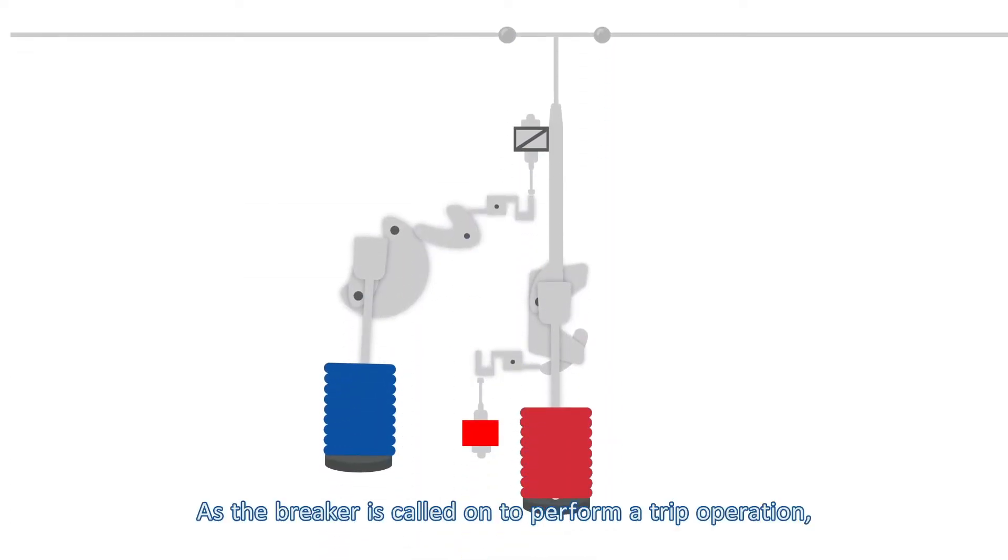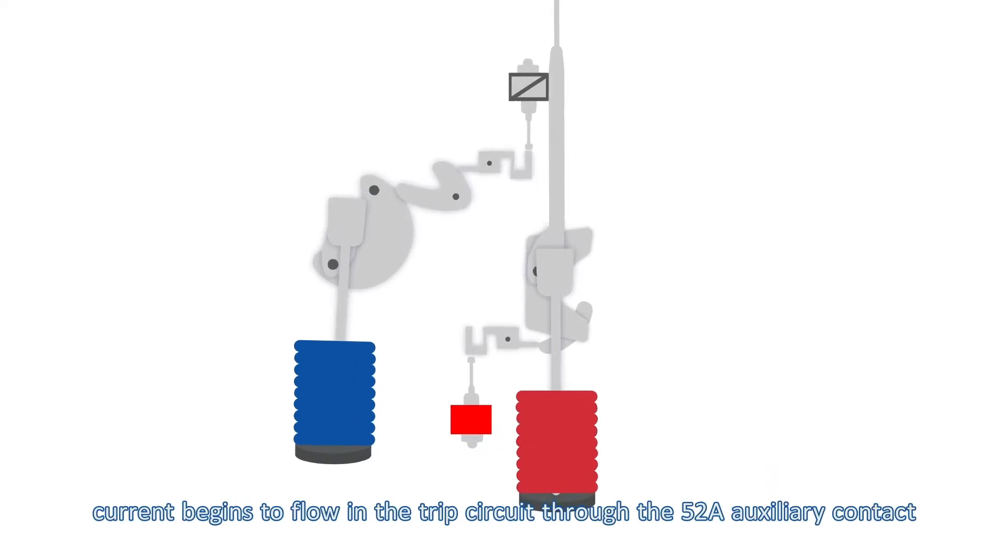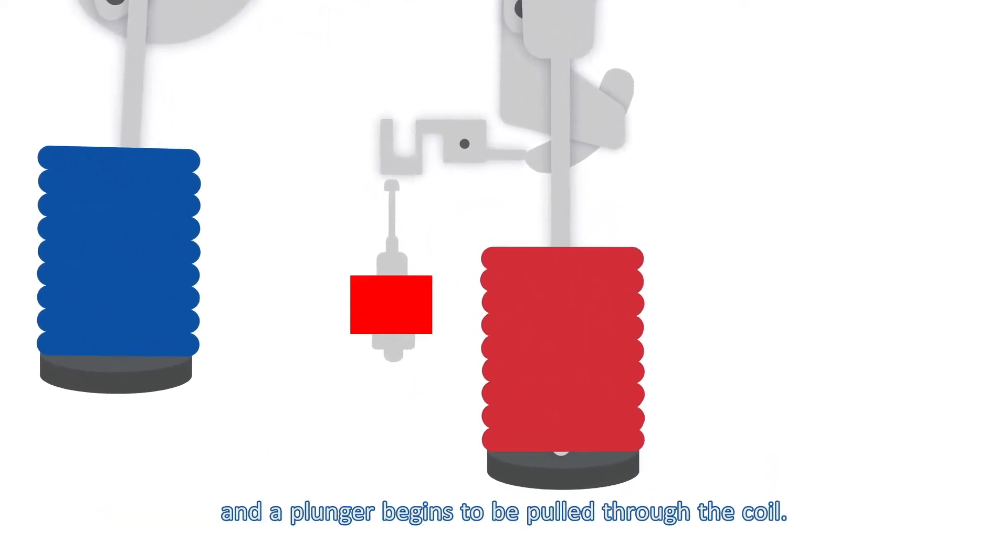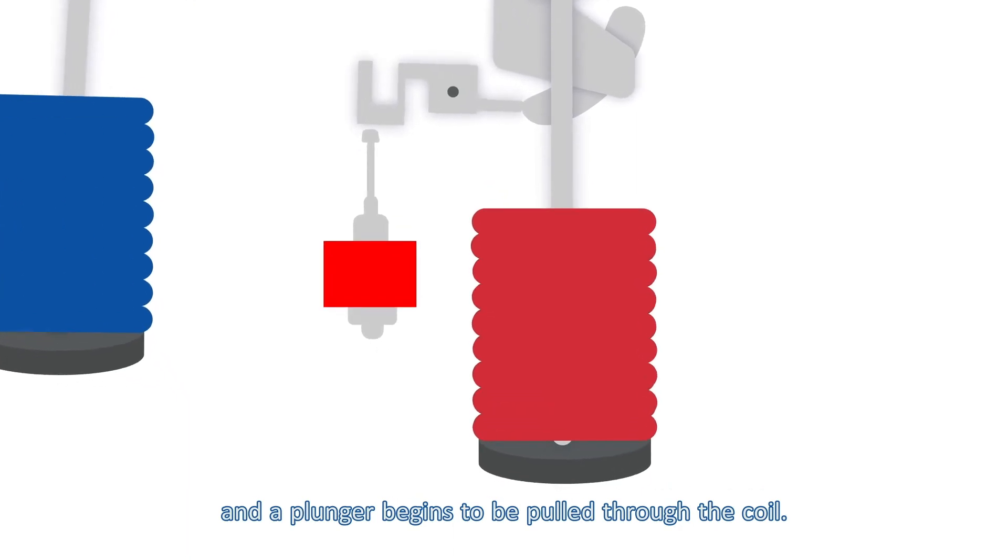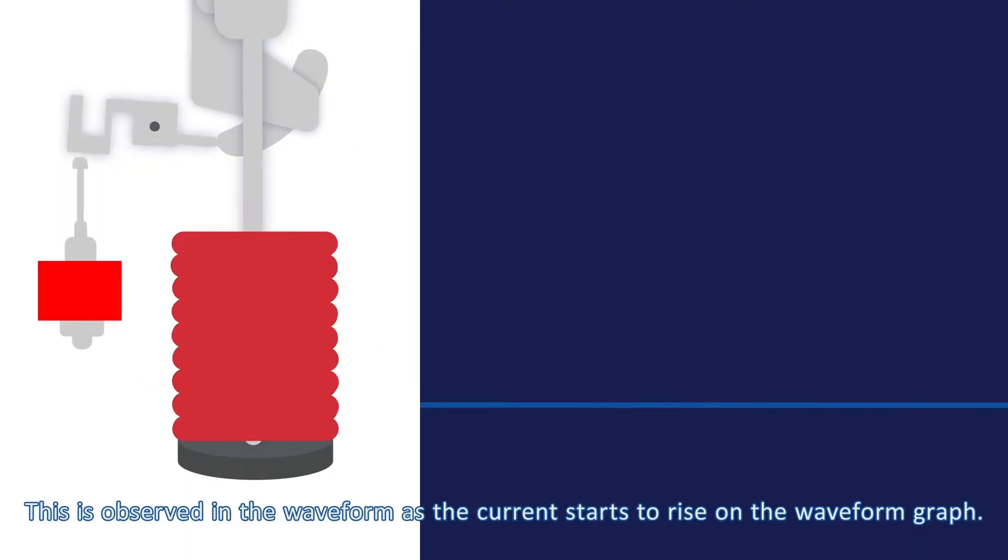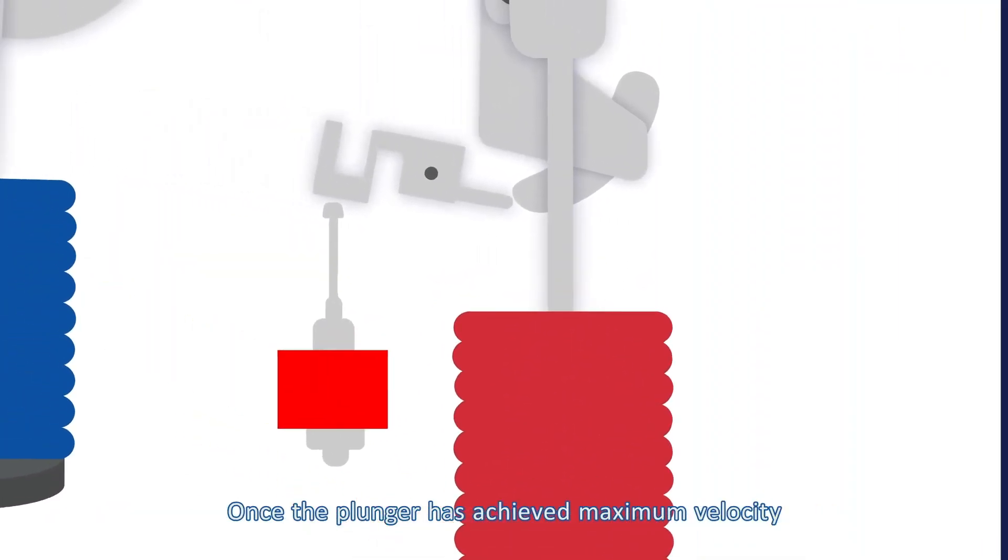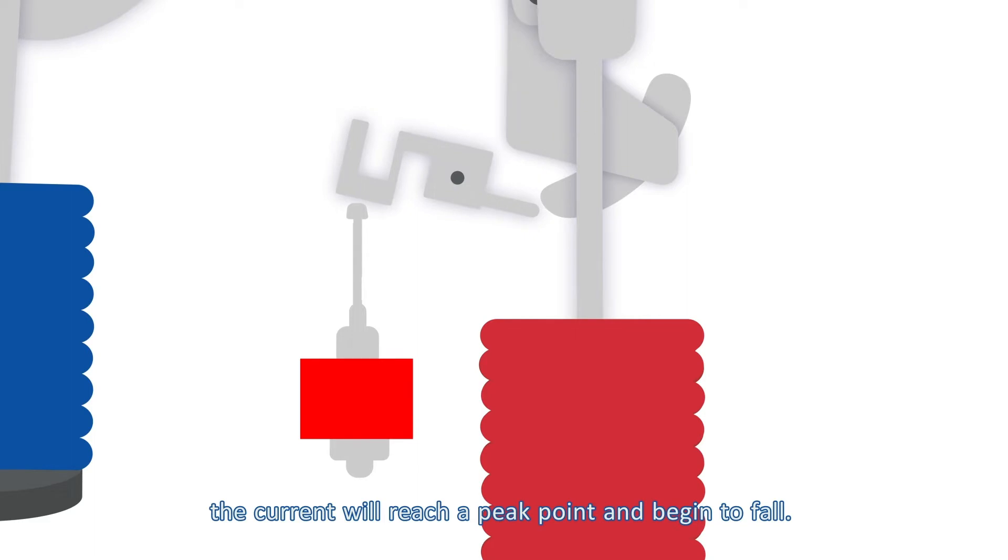As the breaker is called on to perform a trip operation, current begins to flow in the trip circuit through the 52A auxiliary contact and a plunger begins to be pulled through the coil. This is observed in the waveform as the current starts to rise on the waveform graph. Once the plunger has achieved maximum velocity, the current will reach a peak point and begin to fall.